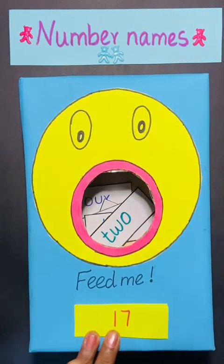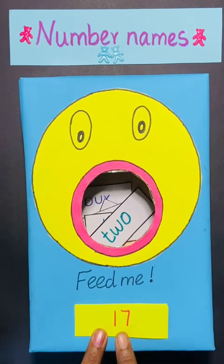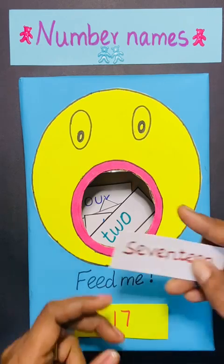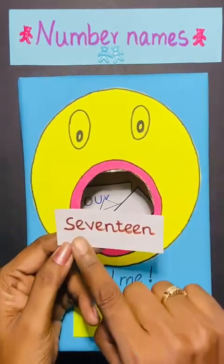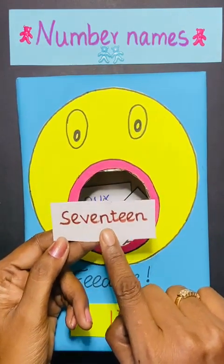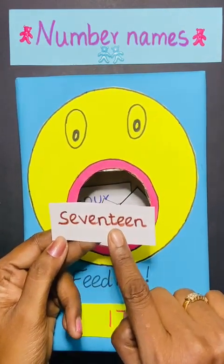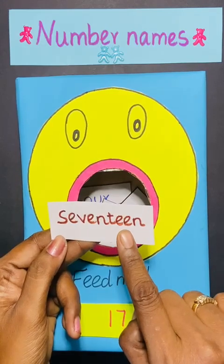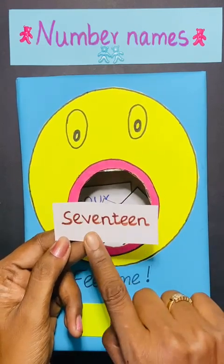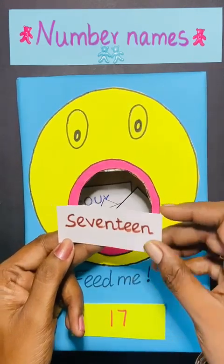What is this number? 17. So first we have to write the spelling of 7. S-E-E-V-E-N. 7. Then T-E-E-N. 10. 17.